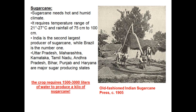Now we talk about oil seeds. In India, groundnuts are the most produced oil seed. Other oil seeds include mustard, coconut, sesame, soybean, castor, cotton, linseed, and sunflower. Groundnut accounts for more than half of the major oil seeds produced in the country. Andhra Pradesh is the largest producer of groundnuts. Groundnut is a Kharif crop; linseed and mustard are Rabi crops; sesame is a Kharif crop; and castor is grown in both Rabi and Kharif seasons.